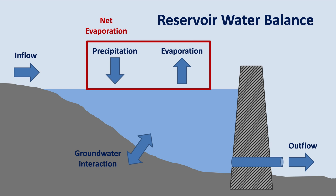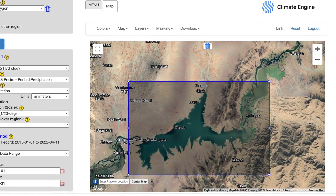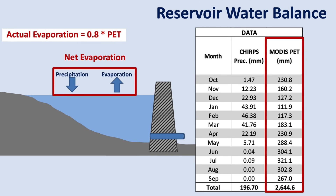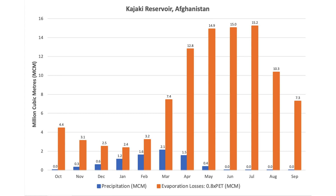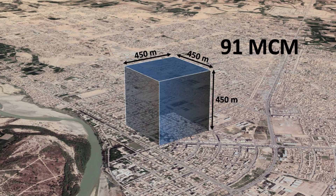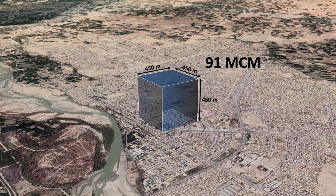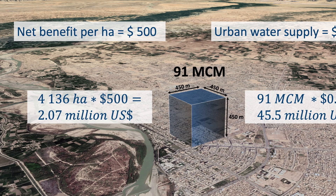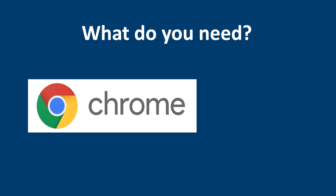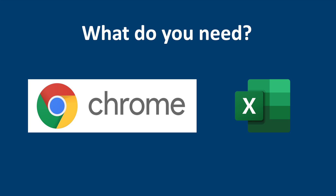We'll quickly review the main components of a reservoir water balance. Then I'll show you where to get free precipitation and evaporation data. From this data, we'll calculate the net evaporation rate and also the monthly evaporation losses from the Kajaki Reservoir. Then we will evaluate the economic impact of evaporation losses by comparing them to domestic and irrigation water demand in Afghanistan. All you need is access to the internet and MS Excel.